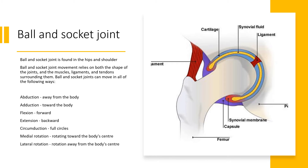The first joint we will look at is the ball and socket joint, found in the hips and the shoulder. As you can see from the diagram, it is like a ball that fits nicely into a socket shape. This joint allows the most amount of movement — away from the body, towards the body, arms and legs forward and back, full circles, medial rotation towards the body centre, and rotation away from the body centre. Terms like abduction, adduction, flexion, and extension describe the different types of movement this joint allows.